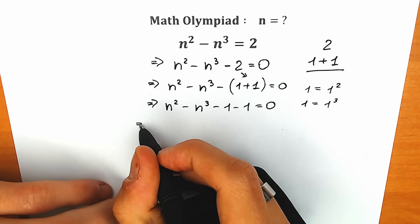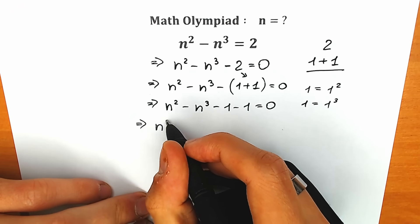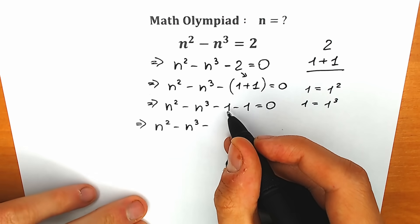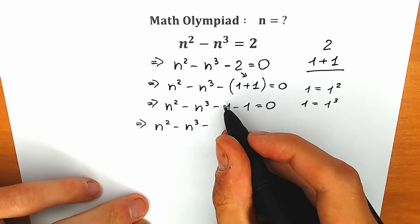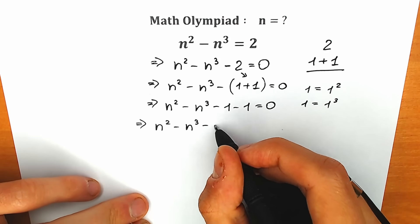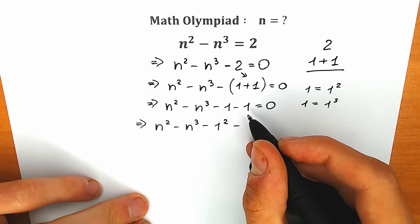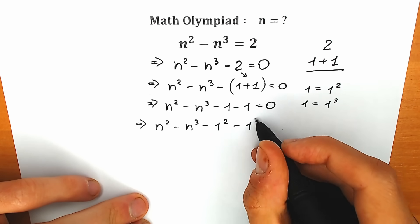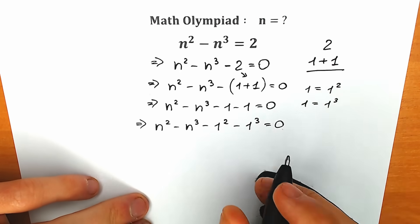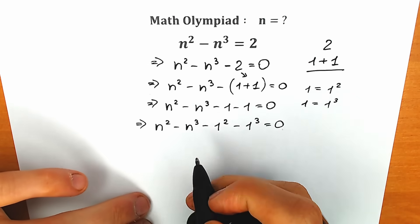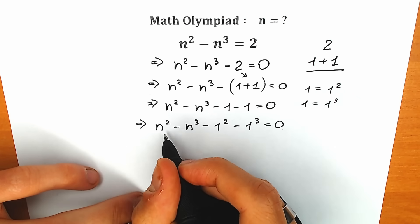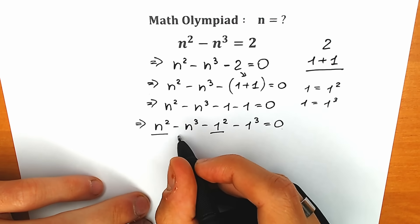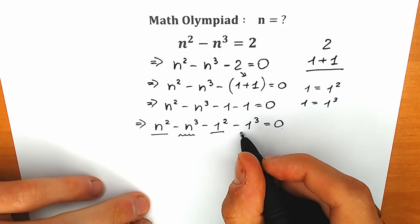So right now let's do this. We have n-squared minus n-cubed minus — instead of this 1, let's use 1-squared — so minus 1-squared. And minus, instead of this 1, let's write 1-cubed, equal to 0. Now, as I said before, let's see it from a different angle. We have n-squared and we can group it with this 1-squared. We can group this n-cubed with this 1-cubed.